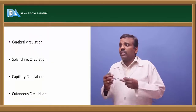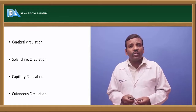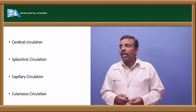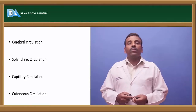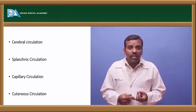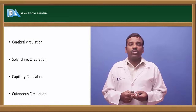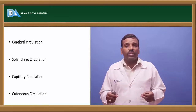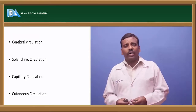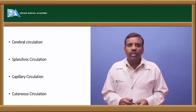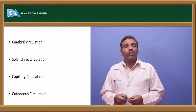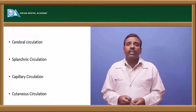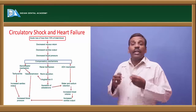Cerebral circulation supplies the cerebral cortex, cerebellum, and higher centers. Splanchnic circulation is specialized for the stomach, spleen, and pancreas. Capillary circulation refers to blood flow in the capillaries. Cutaneous circulation refers to arterial and venous supply to the skin.